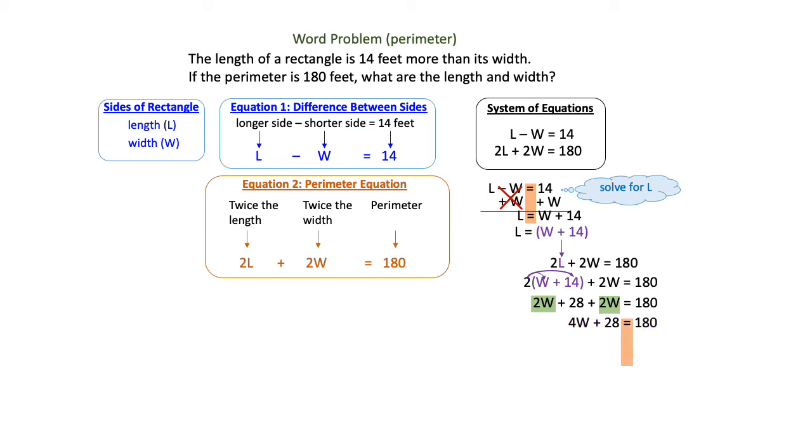Then I will subtract 28 from both sides of that equation, and that will give me 180 minus 28 on the right-hand side, which is 152. So 4W equals 152. Finally, I will divide by 4. Dividing by 4 gives me 152 divided by 4, which is 38, so W equals 38.